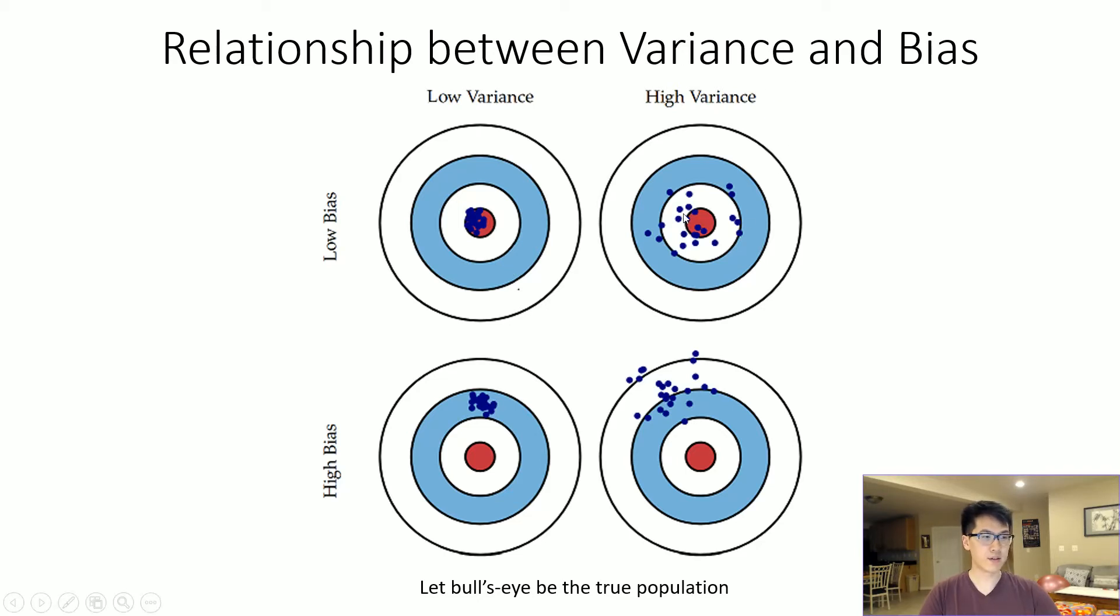High variance and low bias here. High variance means all these points are spread out, and low bias means they're not centered—not close to the red dot target for high accuracy.